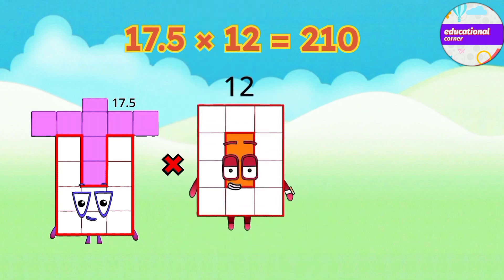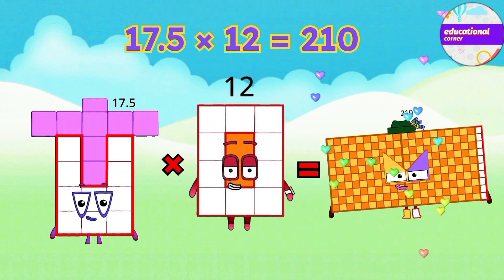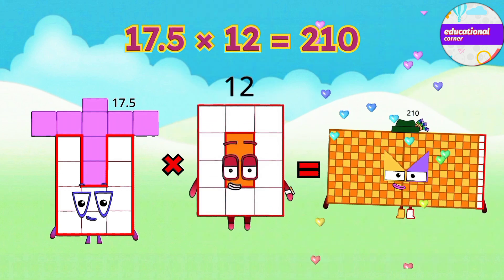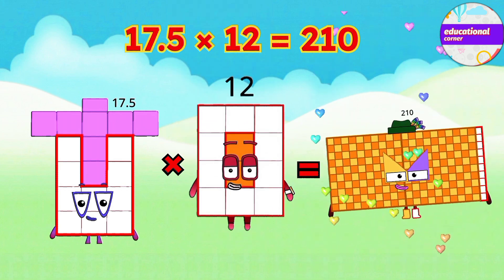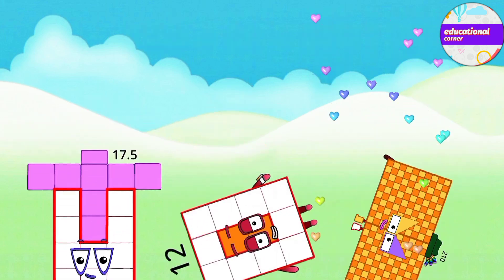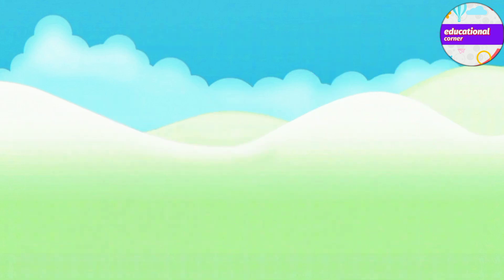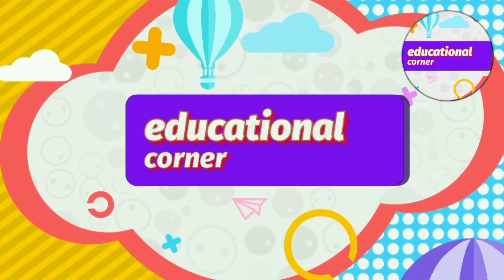17.5 multiplied by 12 equals 210. Hope you liked the video. Bye!